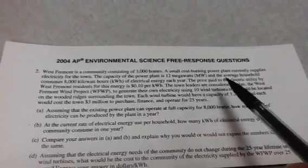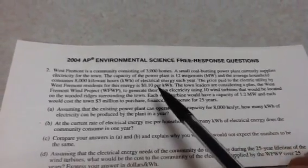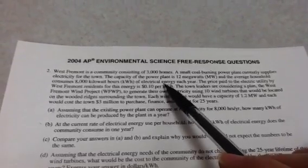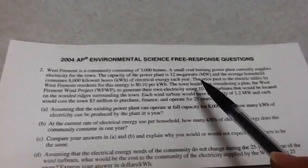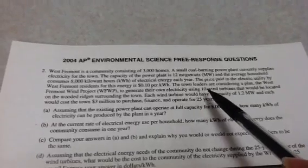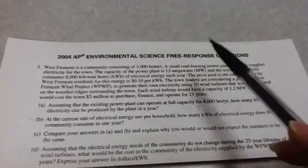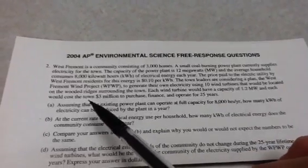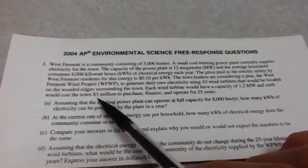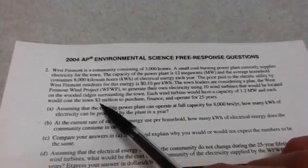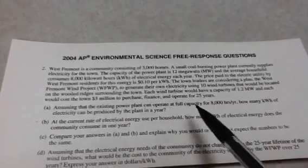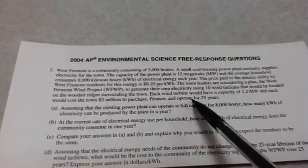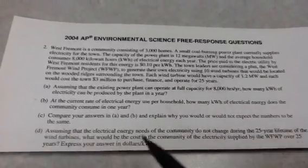All right, let's see. The price that you're going to pay for the energy is $0.10 per kilowatt hour. So there's your last little fraction. And then they want to have this wind project going down. They're going to have 10 wind turbines, and each one's going to have a 1.2 megawatt capacity. And each one also costs $3 million to purchase. So each one's $3 million. You got 10 of them, and that's for buying them, financing them, and operating them for 25 years.